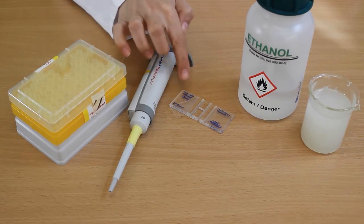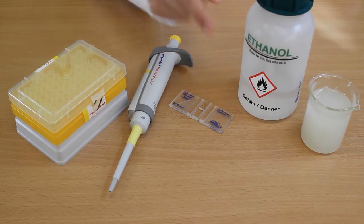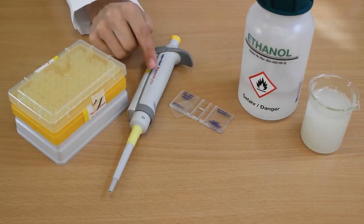For the exercise you will need a hemocytometer, its coverslip, ethanol, your sample and a pipette with tips.